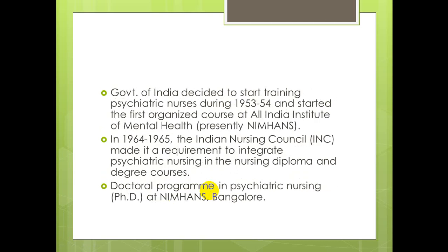The Government of India decided to start training psychiatric nurses during 1953–1954 and started the first organized course at the All India Institute of Mental Health. In 1964–1965, the Indian Nursing Council made it a requirement to integrate psychiatric nursing into the Nursing Diploma and Degree courses. Similarly, in 1965, the Indian Nursing Council made psychiatric nursing a requirement for the Diploma course as well.